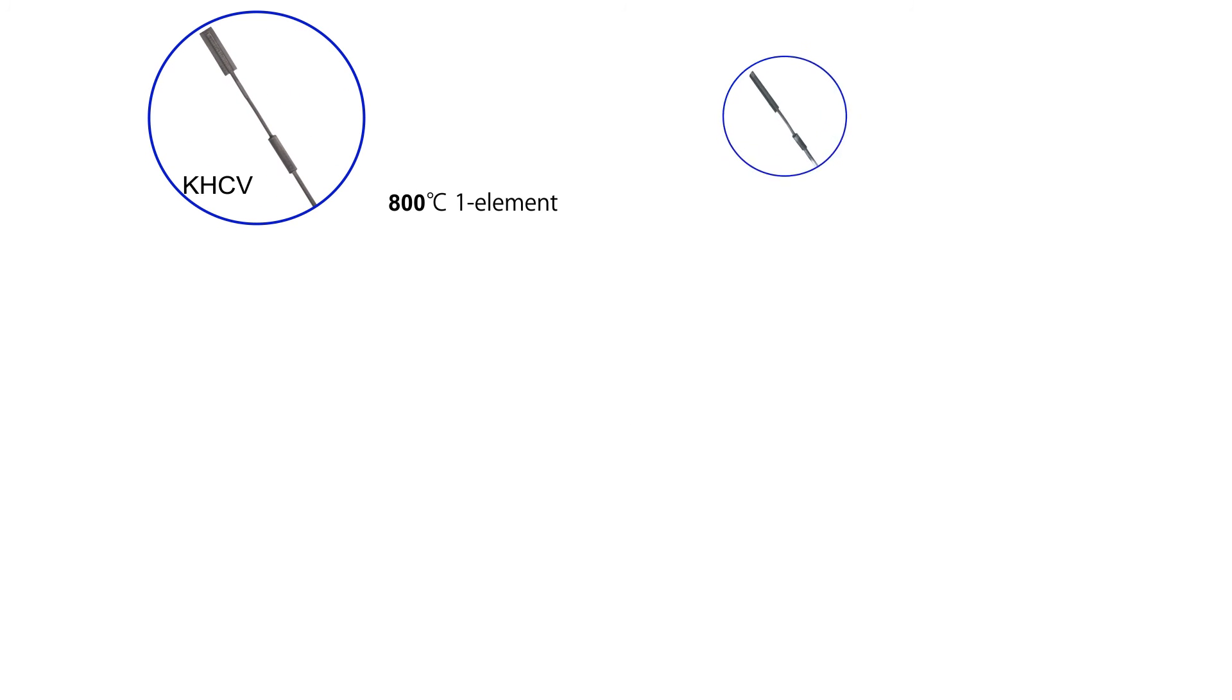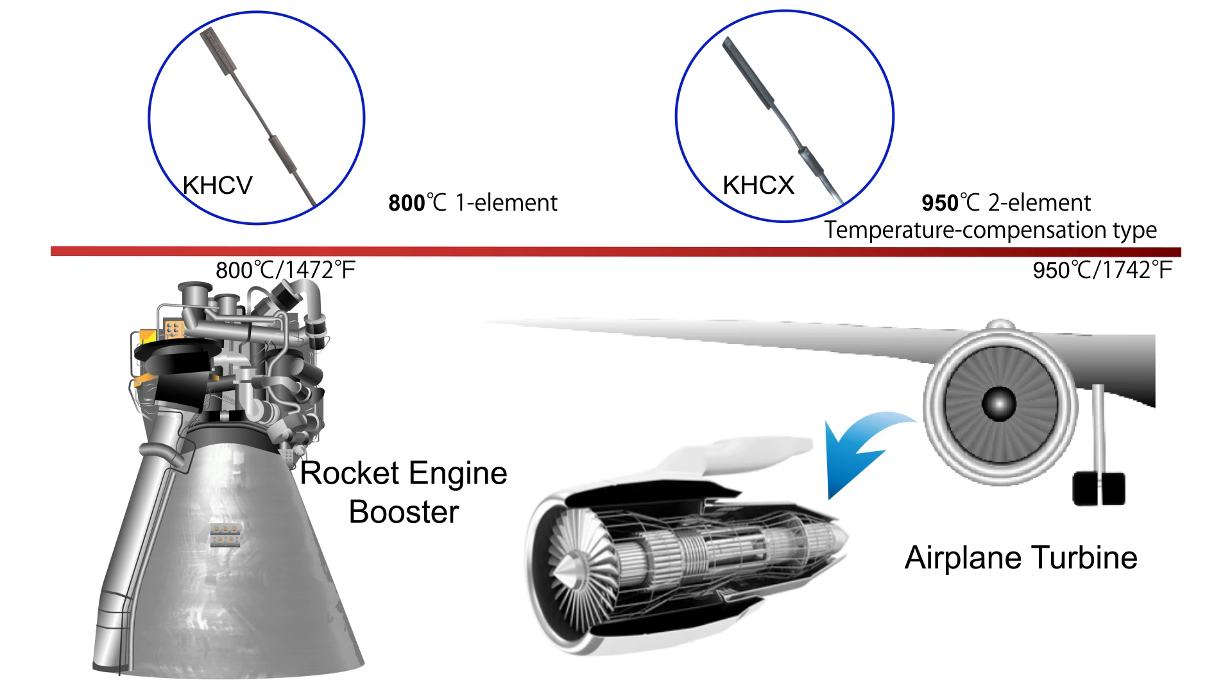The KHCV and KHCX are designed for extremely hot environments such as rocket boosters, up to 950 degrees Celsius.